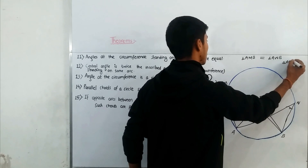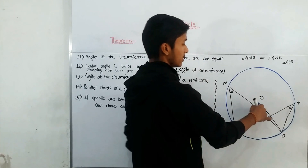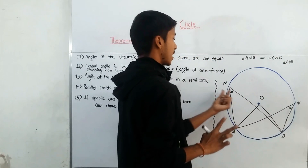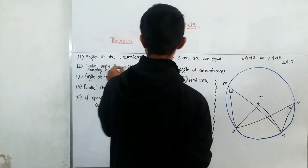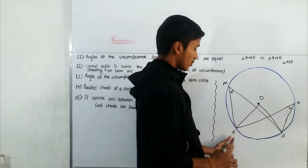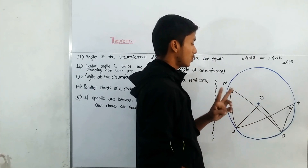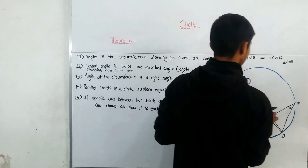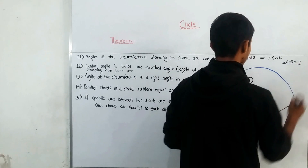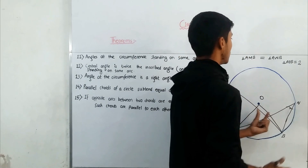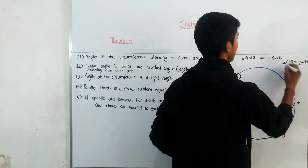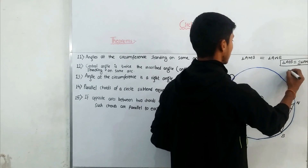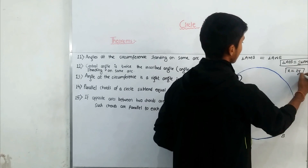Theorem 12: the central angle is twice the inscribed angle standing on the same arc. Angle AOB is the central angle, and angle AMB is the inscribed angle — both standing on the same arc AB. So angle AOB is twice angle AMB. If the inscribed angle is Y and the central angle is X, then X equals 2Y.